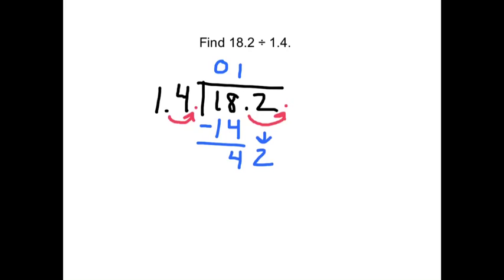How many times does 14 go into 42? We skip count. 14, 28, 42. Three times. And the decimal will come straight up into the answer. So 18 and 2 tenths divided by 1 and 4 tenths is equal to 13.